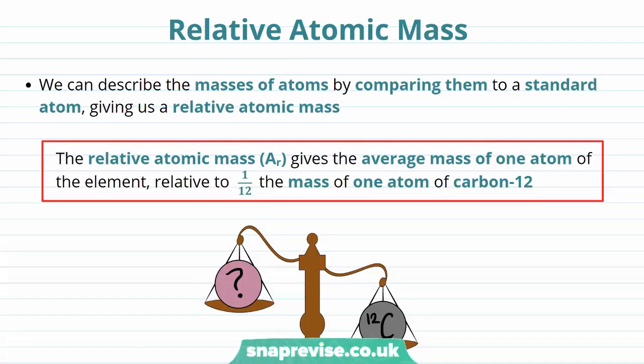If you've seen our video on the structure of the atom, you'll know that protons, neutrons and electrons, and therefore atoms, are all incredibly small and incredibly light. For example, a proton and a neutron weigh approximately 1.7 times 10 to the minus 27 kilograms, and these are both about 2,000 times heavier than an electron.